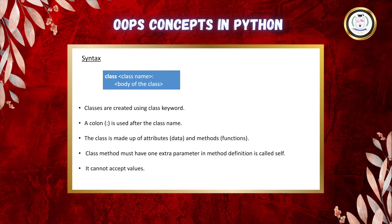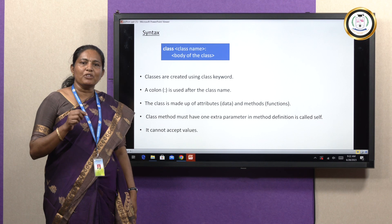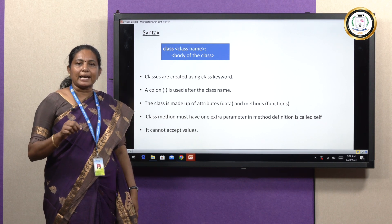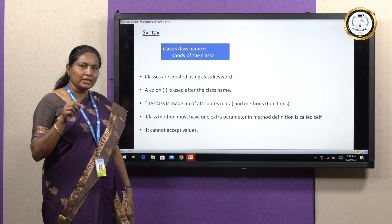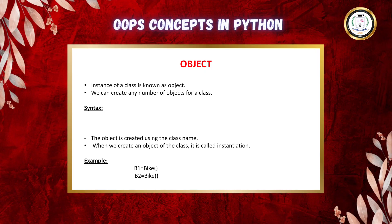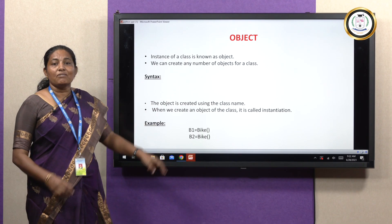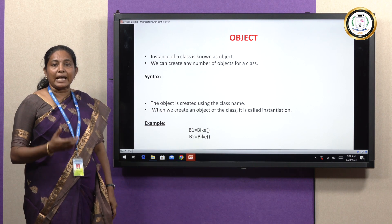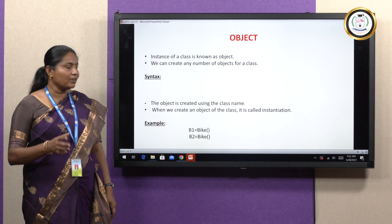The class is made up of attributes and methods. A class method must have one extra parameter called self. We must include the self parameter in every Python method — it cannot accept any values, but we need to include that parameter called self. An instance of a class is known as an object. We can create any number of objects for a class. With the help of an object, we can access data members and methods of a class.